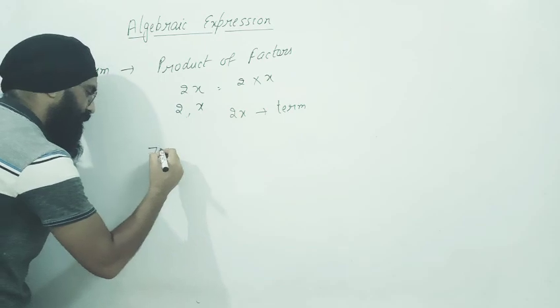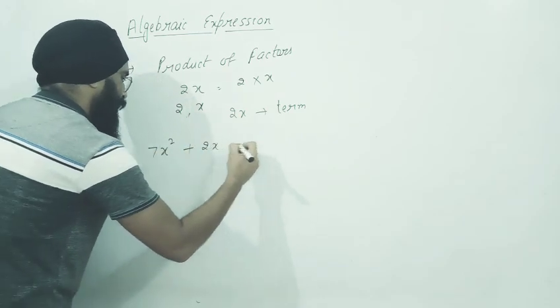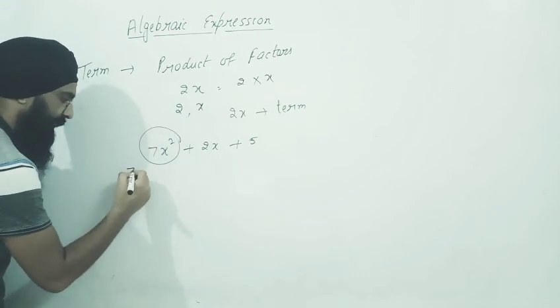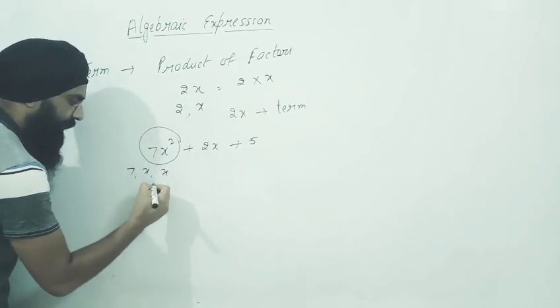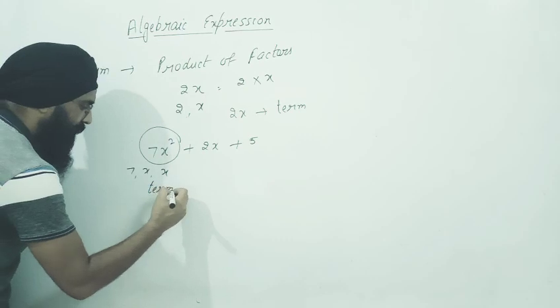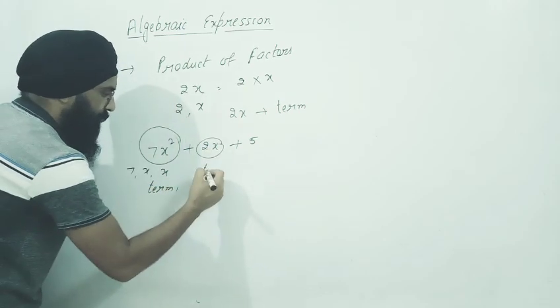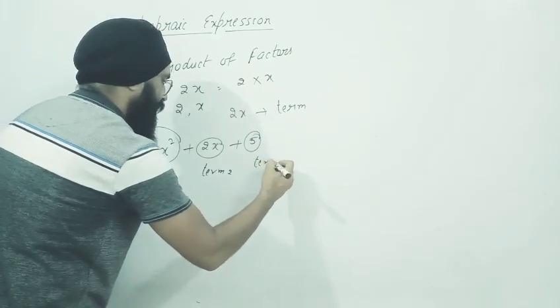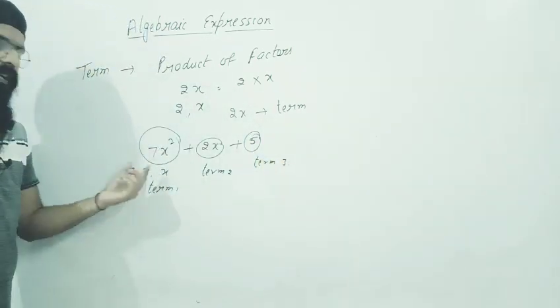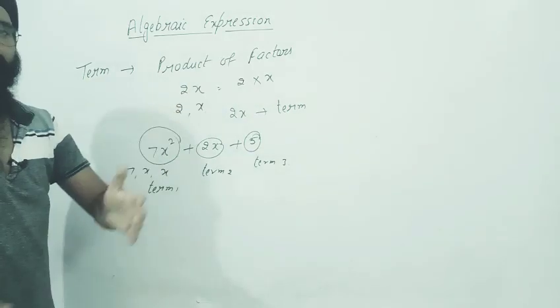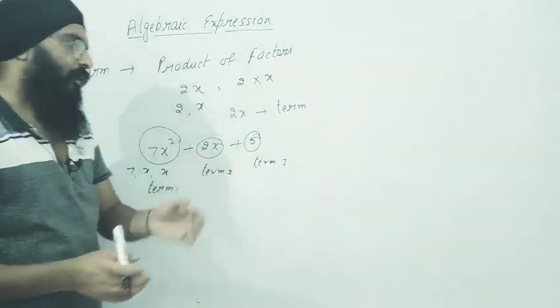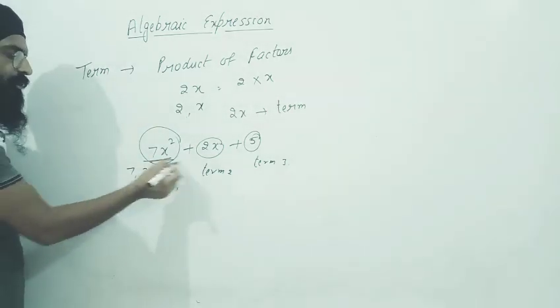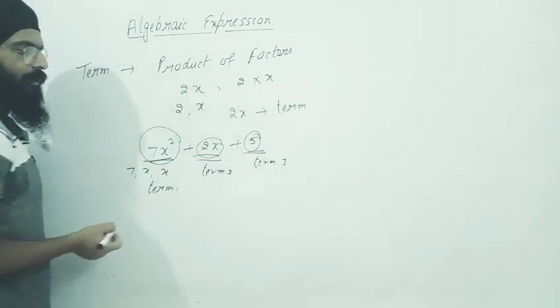Like let's see an example: 7x plus 2x plus 5. Now if you look at this, its factors are 7 and x - this is one term, term 1. This is term 2. This is term 3. So we have three terms.